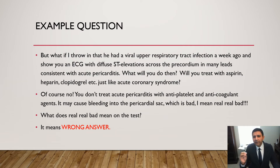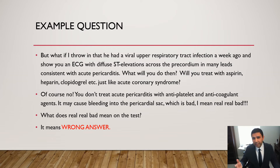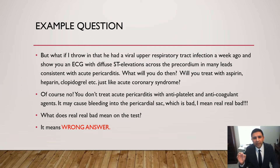But look here — what if I throw in that he had a viral upper respiratory tract infection a week ago and I show you an ECG with diffuse ST elevations across the precordium in many leads, consistent with acute pericarditis? So what will you do? Are you going to treat him with aspirin, heparin, and clopidogrel just like you would treat an acute coronary syndrome? Well, of course not. You don't treat acute pericarditis with antiplatelet and anticoagulant agents — it may cause bleeding into the pericardial sac, which is very bad. And on the test, that means a wrong answer, and we wouldn't want that.